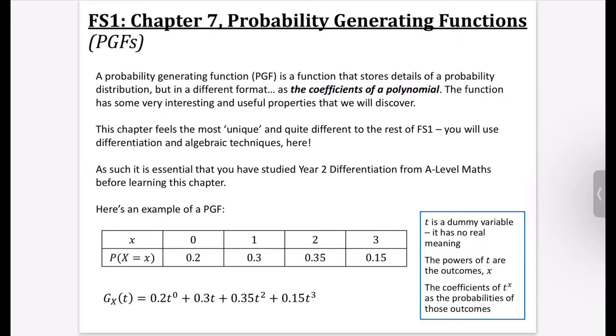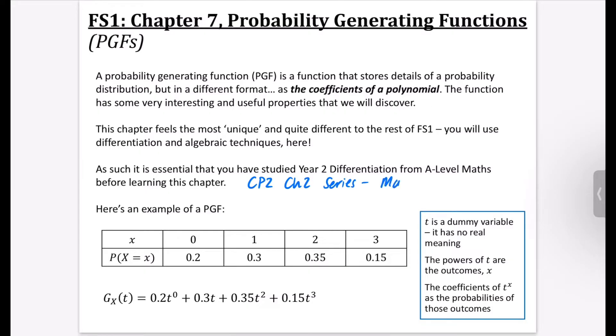Now, because there's differentiation, it is essential that you have studied the year two differentiation content from A-level maths before learning this chapter. And I would also recommend having looked at Core Pure 2, Chapter 2, which is on series, but in particular, you would like to have a look at the Maclaurin series. Now, it's not absolutely essential that you've looked at Maclaurin series because it only comes up like a tiny bit in this chapter, but it's probably better to leave this one in Further Stats until you've done enough from Core Pure and you've come across Maclaurin series because it will just help you access a couple of the smaller parts from some exam questions as well.